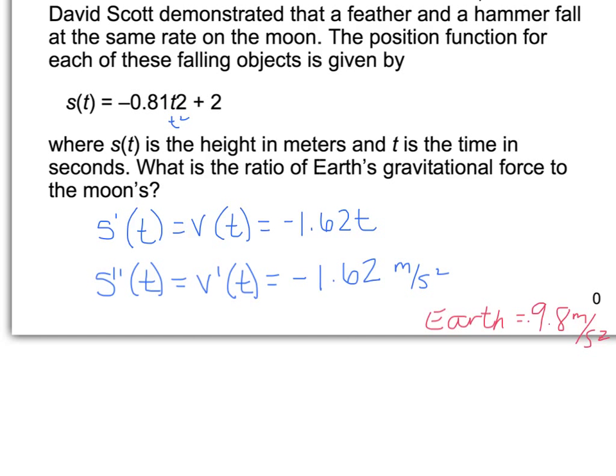So because it wants the ratio of the Earth's gravitational force to the moon's, we're going to take that negative 9.8 and divide it by the negative 1.62 that we just calculated, and you'll see that our ratio is approximately equal to 6.0.